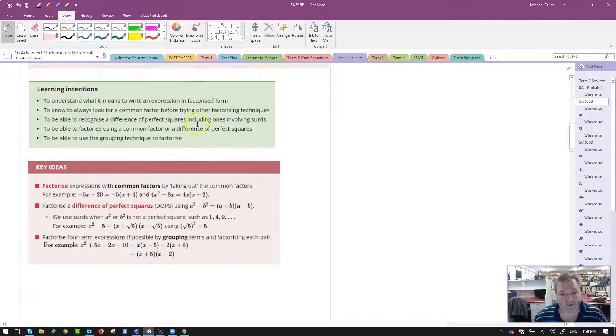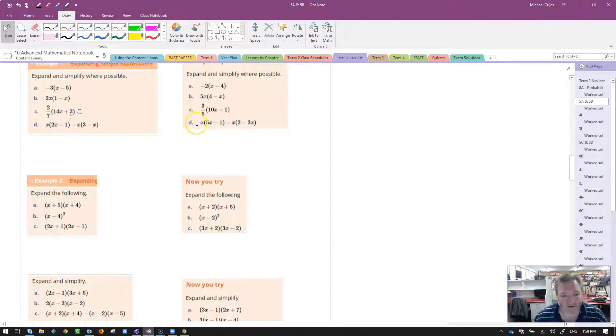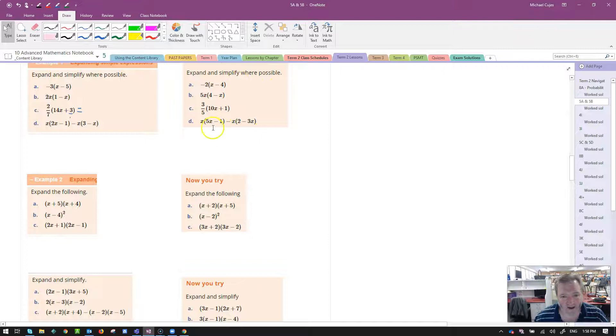Let's go ahead and do a few examples. I'm going to do the ones on the left first. Negative 3 multiplied by x minus 5. So negative 3 times x is negative 3x. That negative still belongs to the 3. Negative 3 times negative 5, negative times a negative is a positive, 3 times 5 is 15.